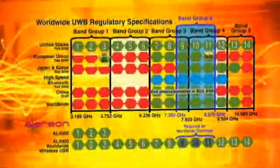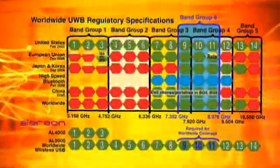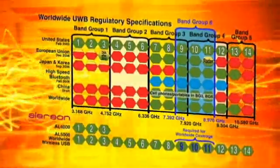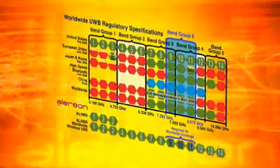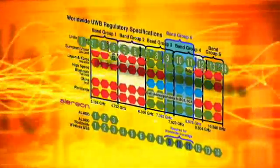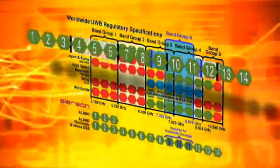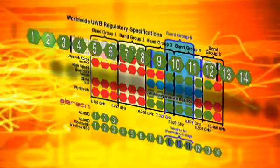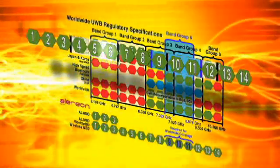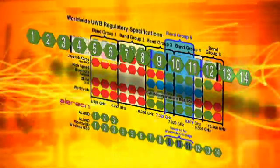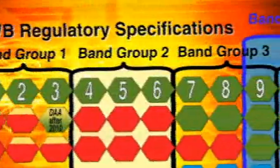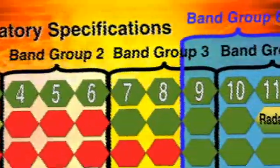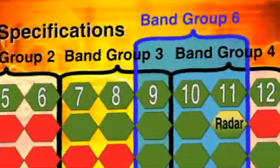So let's talk about these regulatory items first. Here's a diagram that basically illustrates the YMedia spectrum. As you can see, the ultra-wideband YMedia spectrum is broken up into 14 channels or bands, and those 14 channels are broken up into 6 different band groups.